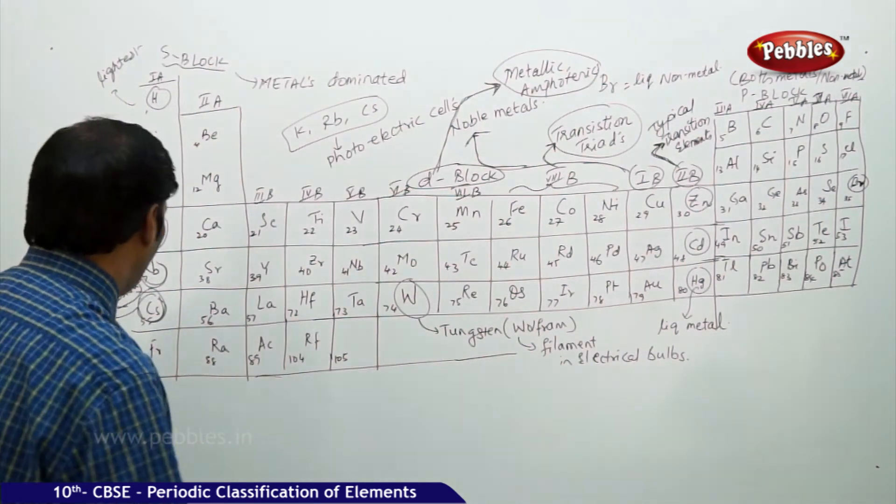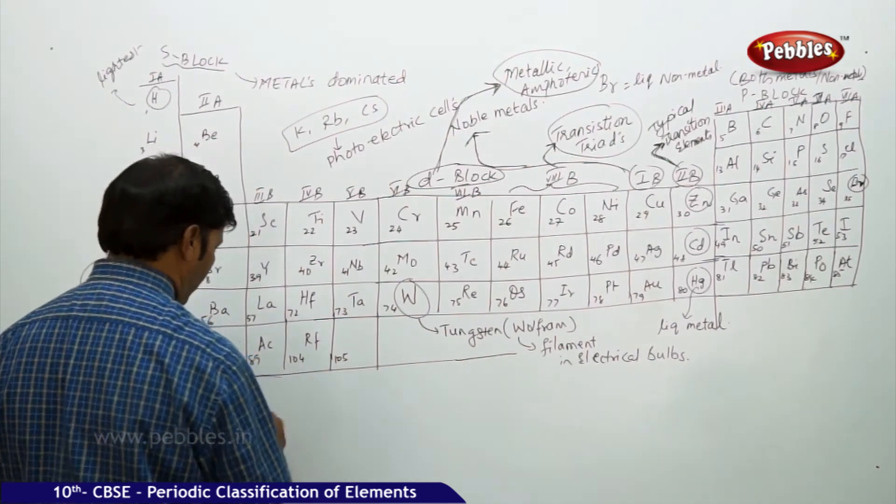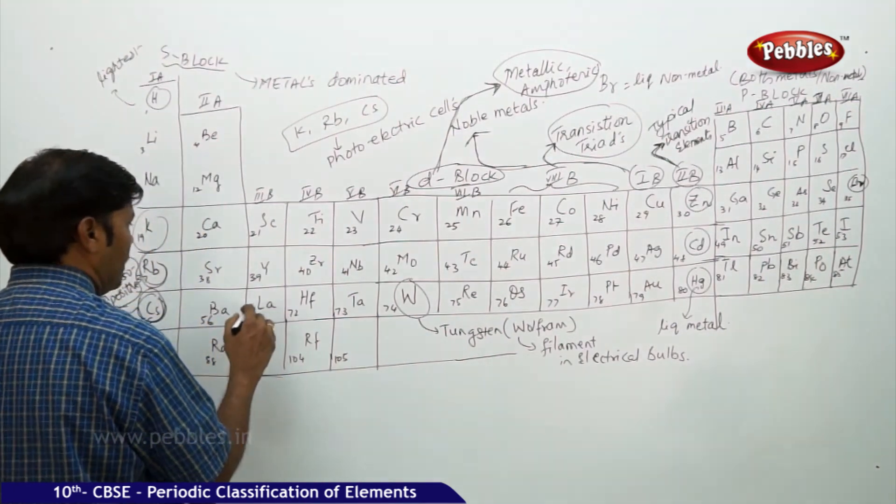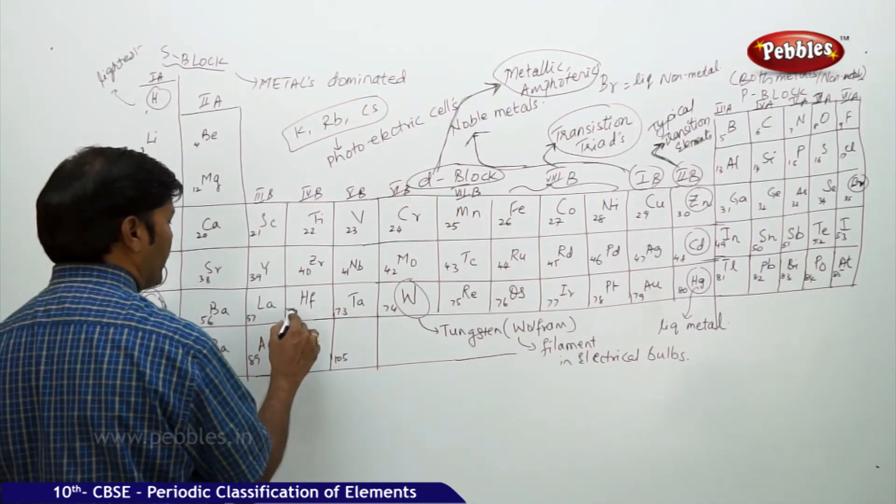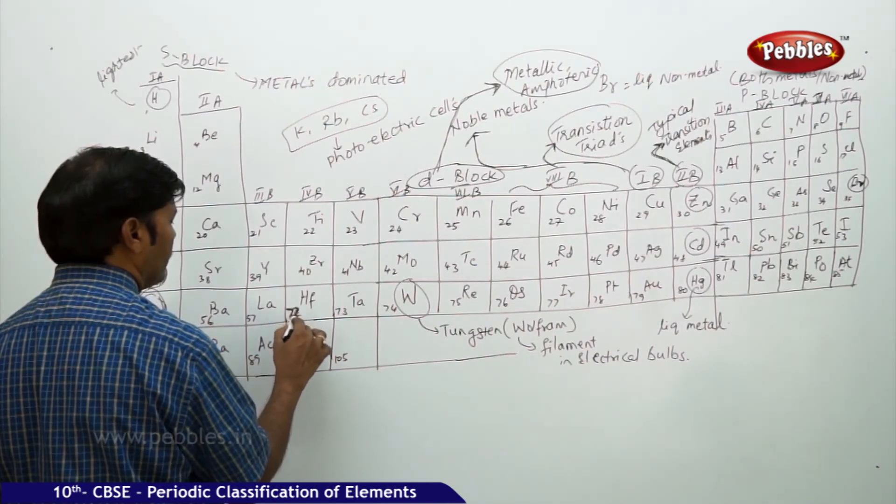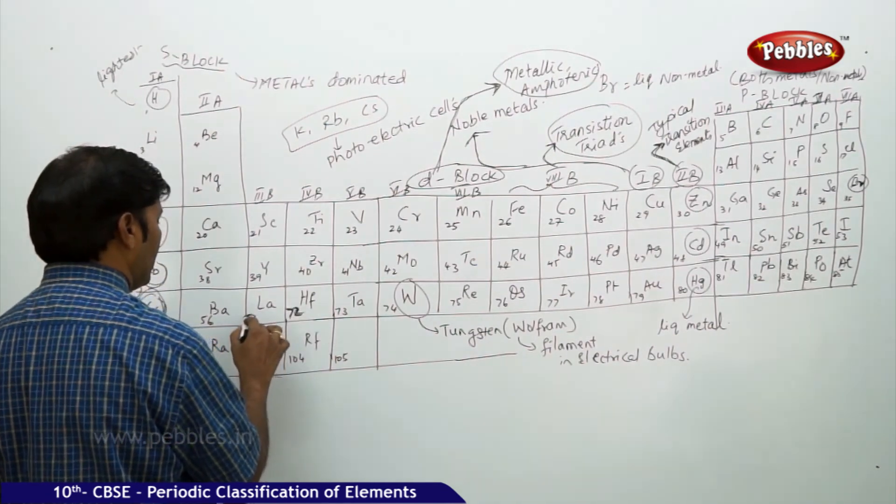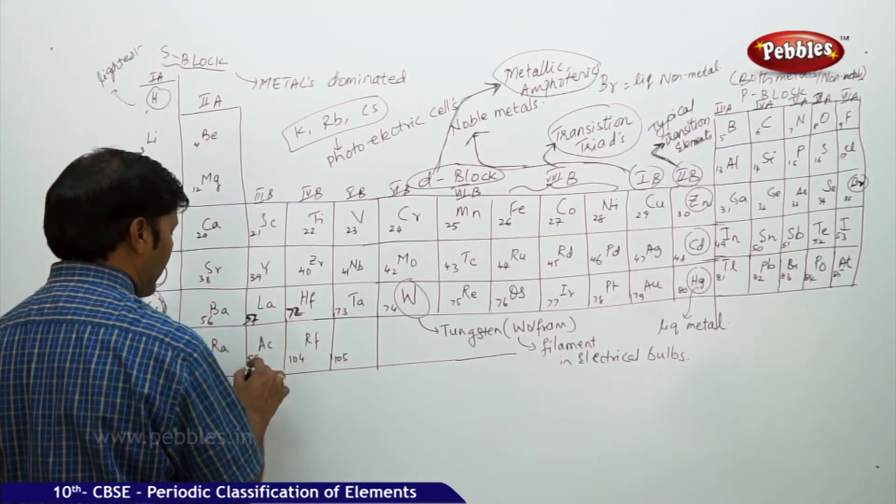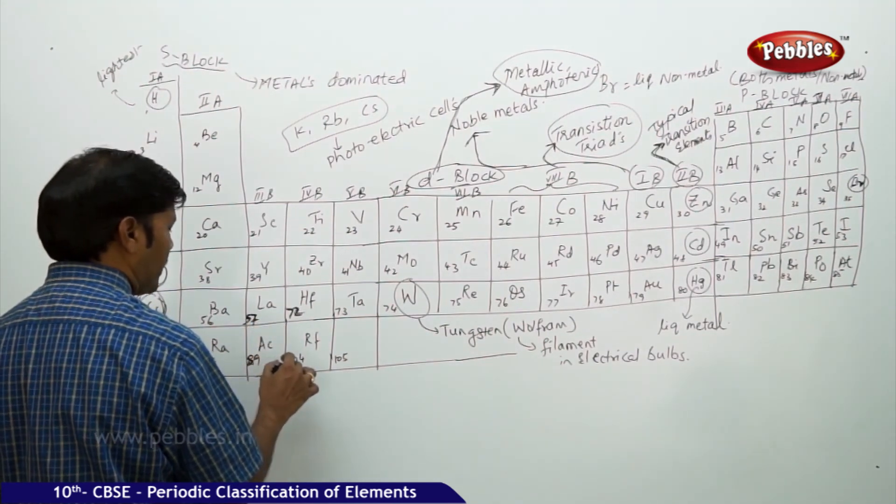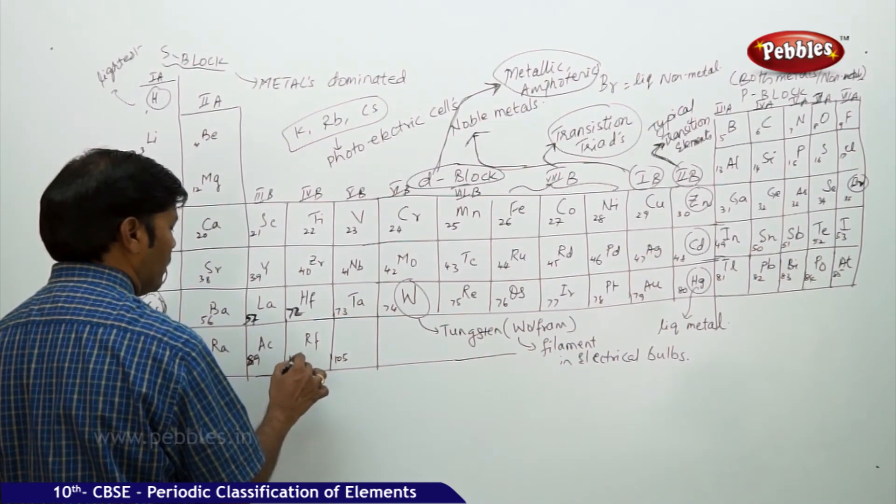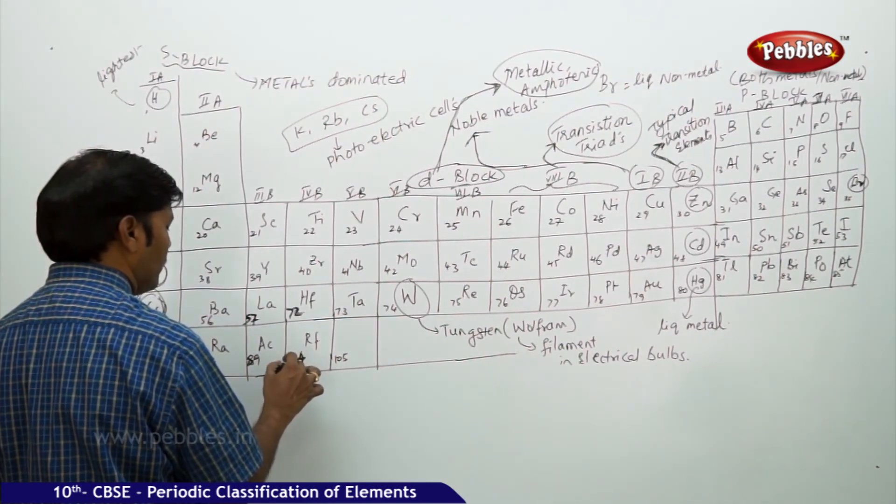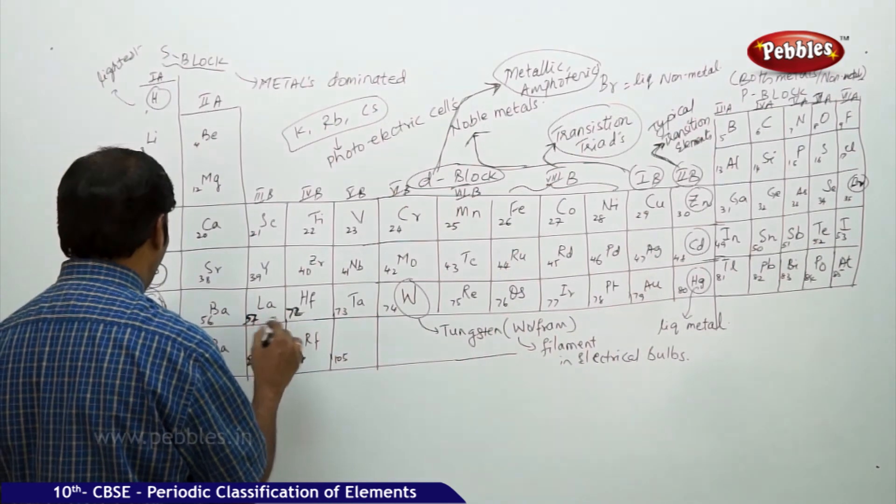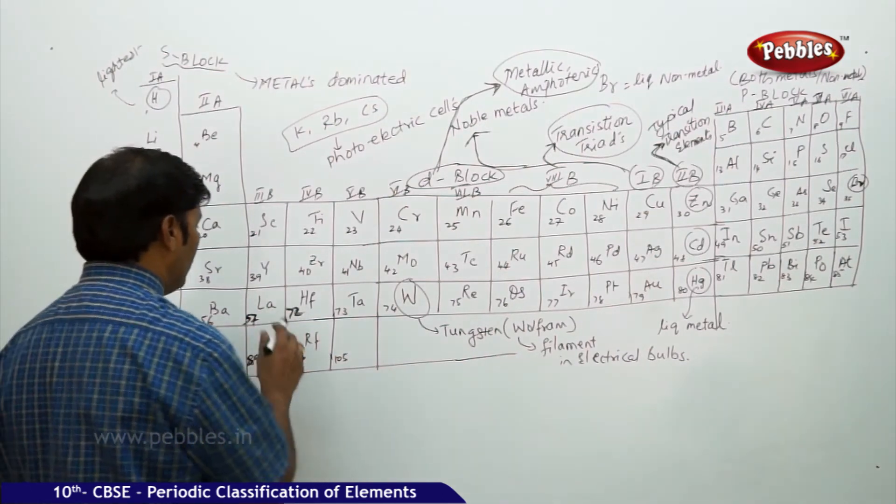This is the complete picture. Let me finish F block elements also. If you take F block elements, you can see a break here. 57 is lanthanum, 89 is actinium, 104 is rutherfordium. You can see a big break between these two sets of elements.